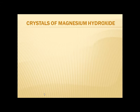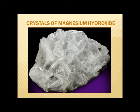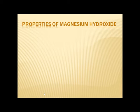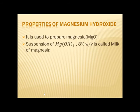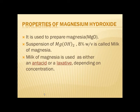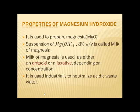In this slide you can see crystals of magnesium hydroxide. Some of its important properties: it is used to prepare magnesia. A suspension of magnesium hydroxide is also called milk of magnesia. This milk of magnesia is used as either an antacid or a laxative depending on concentration. It is also used in industries to neutralize acidic waste water.